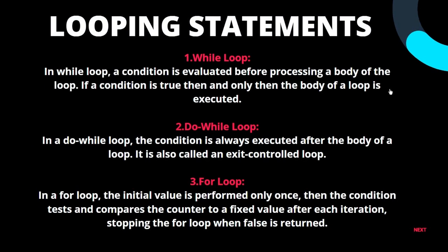There are basically three looping statements in C. In the while loop, a condition is evaluated before processing the body of the loop — if the condition is true, then only the body is executed. In the do-while loop, the condition is always evaluated after the body of the loop. It is also called an exit control loop. Whether the output is true or not, the body executes at least once in a do-while loop.